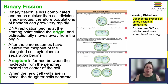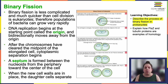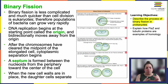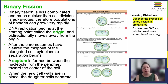Binary fission is the cell division process used by prokaryotes. It's simple, it's fast, and it allows for very rapid bacterial population growth. That bacterial DNA is a single circular chromosome located in the nucleoid, which is that region — it's not an actual nucleus, because prokaryotes don't have membrane-bound organelles.